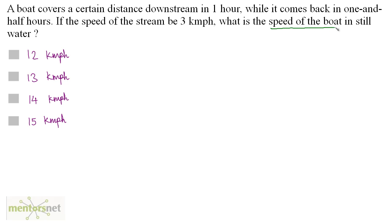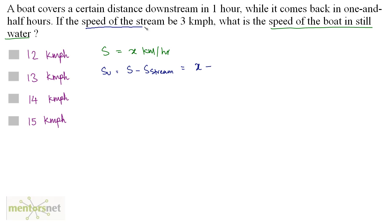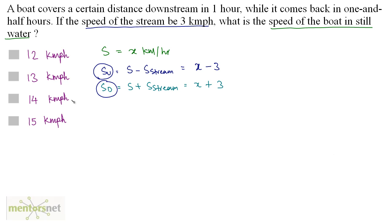Let the speed of the boat in still water be x kilometers per hour, so S equals x kilometers per hour. The upstream speed equals the speed of the boat in still water minus the speed of the stream: x minus 3 kilometers per hour. The downstream speed equals x plus 3. So we have upstream speed as x minus 3 and downstream speed as x plus 3 respectively.